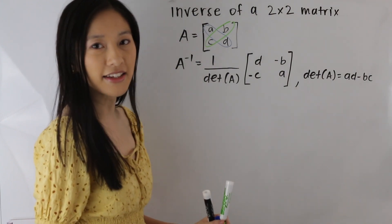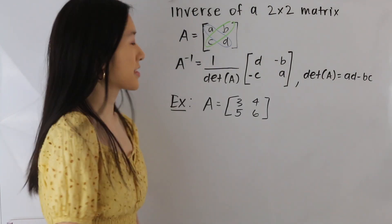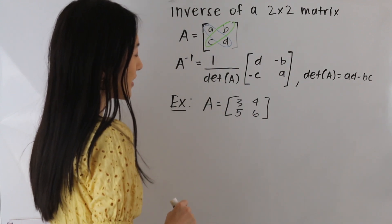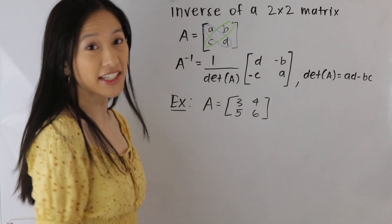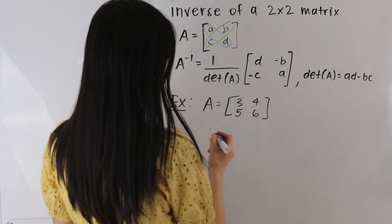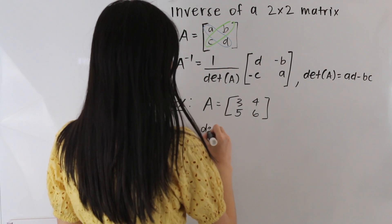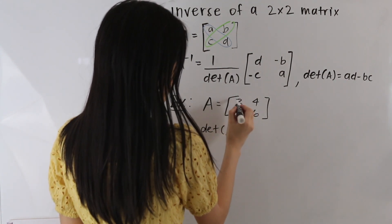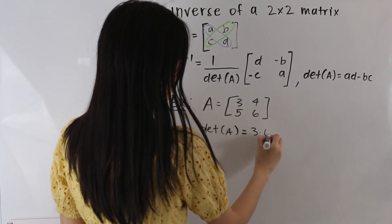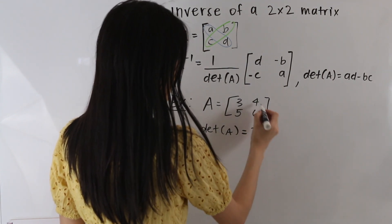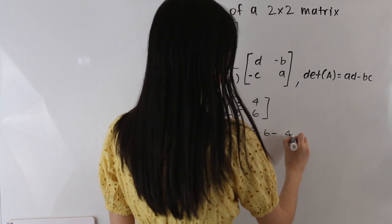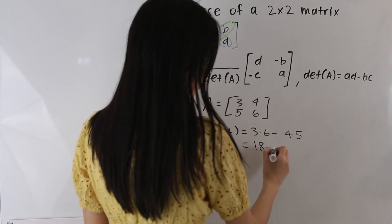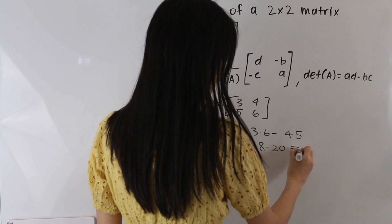So let's go ahead and apply this to an example. We have a matrix A, and the first thing we're going to want to do is find the determinant. So the determinant of A is equal to 3 times 6 minus 4 times 5. So that gives us 18 minus 20, which is just negative 2.